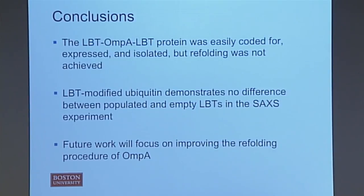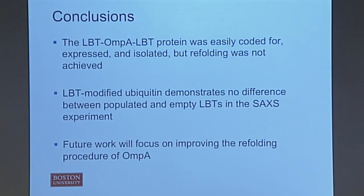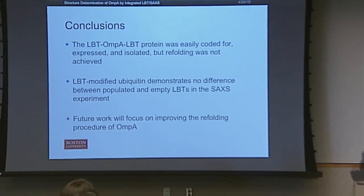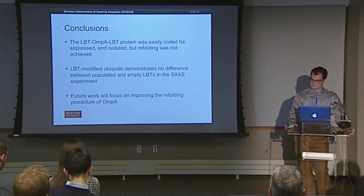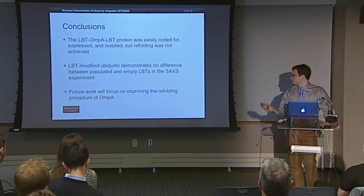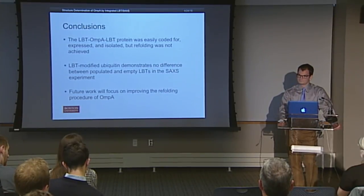In the end, I was able to code for, express, and isolate the LBT-modified outer membrane protein A, but refolding was not achieved and I wasn't able to produce any usable data from the scattering experiment. Working in the simpler ubiquitin system, I was able to obtain good scattering data, but the resolution was insufficient to make any judgment on whether introducing lanthanide ions improved the experiment. Future work will focus on improving the refolding procedure of outer membrane protein A and potentially looking at it with a higher-power instrument.